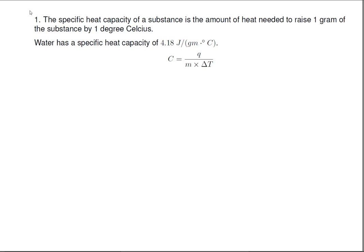In middle school, about the seventh grade, we learn that the specific heat capacity of a substance is the amount of heat needed to raise one gram of the substance by one degree Celsius. Water has a specific heat capacity of 4.18 joules per gram degree C. We have an equation: heat capacity equals Q over M times delta T.